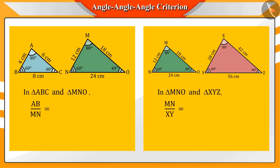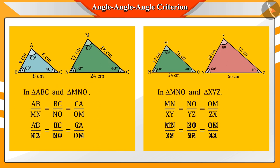In this way, if we take any two similar triangles, then we see that their corresponding sides are proportional.